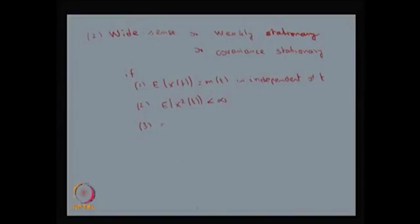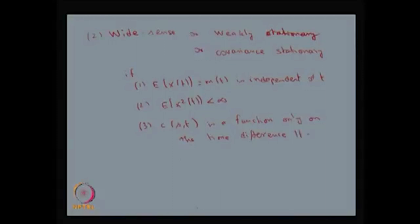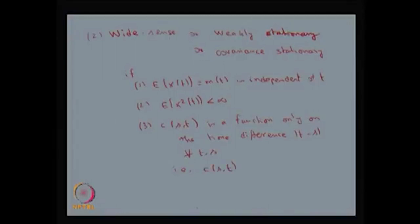The third condition: if you find the covariance function C(s, t), it is a function only of the time difference t minus s, for all t and s. That is, the covariance function for any two random variables x(s) and x(t) depends only on the difference t minus s, not on the actual t or actual s. Mathematically, C(s, t) is a function of |t − s|.